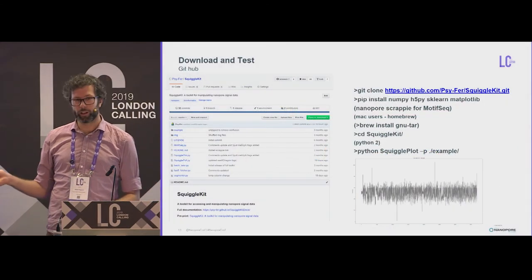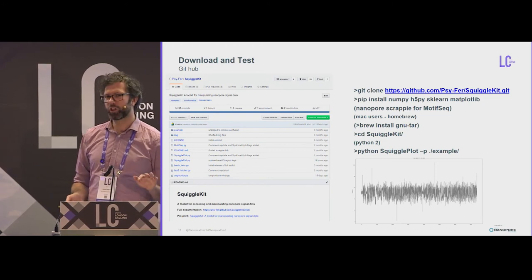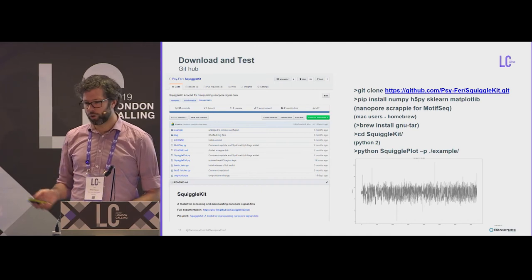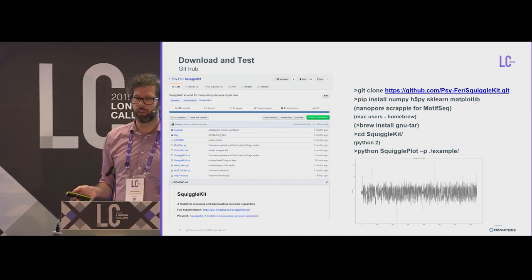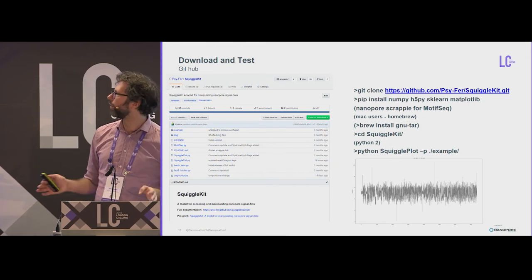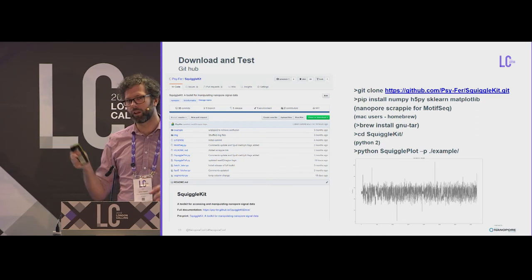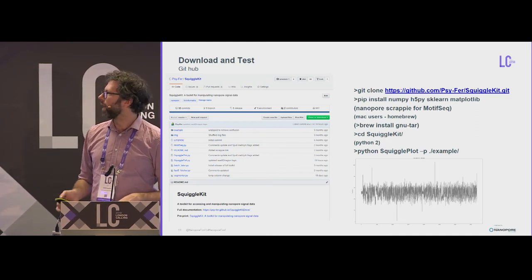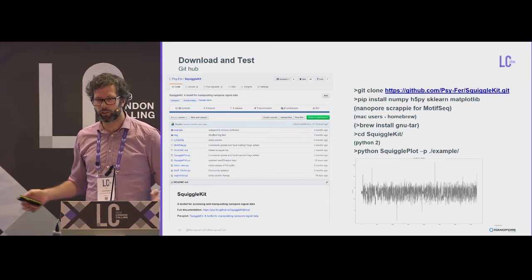So this is available on GitHub. You can download it right now, but you might want to wait just a day. Because there's an update coming. I wrote it all, so it's as simple as possible. No crazy fancy packages. I think the only fancy package I use is for MotifSeq. It's not on a pip wheel. It's called MLPY. It works on Mac. It works on Windows. It works on Linux, obviously.